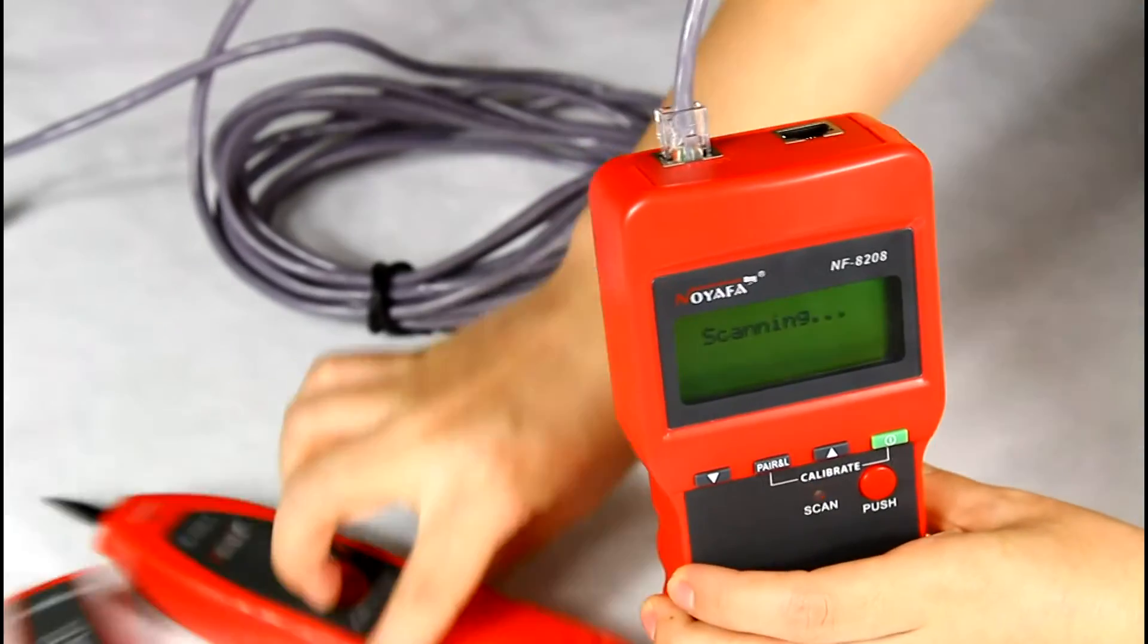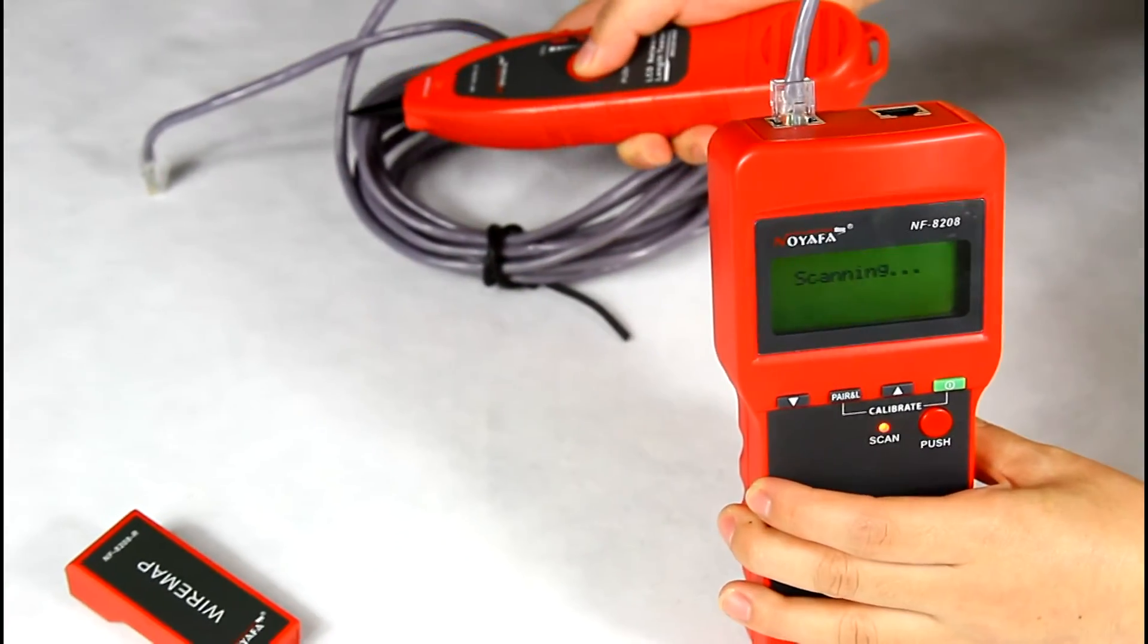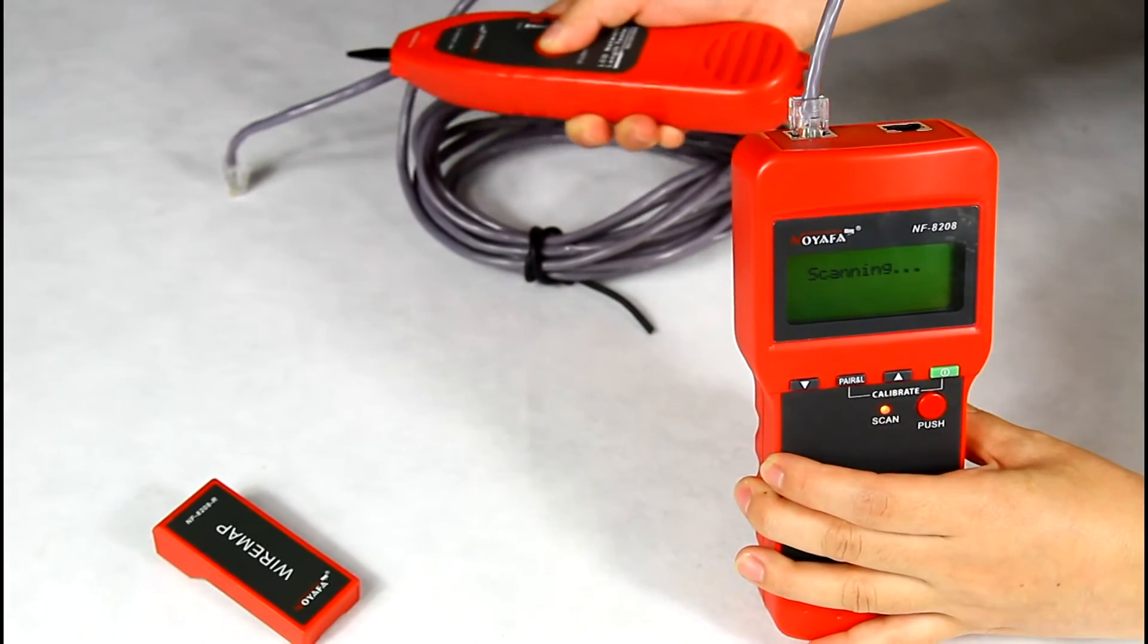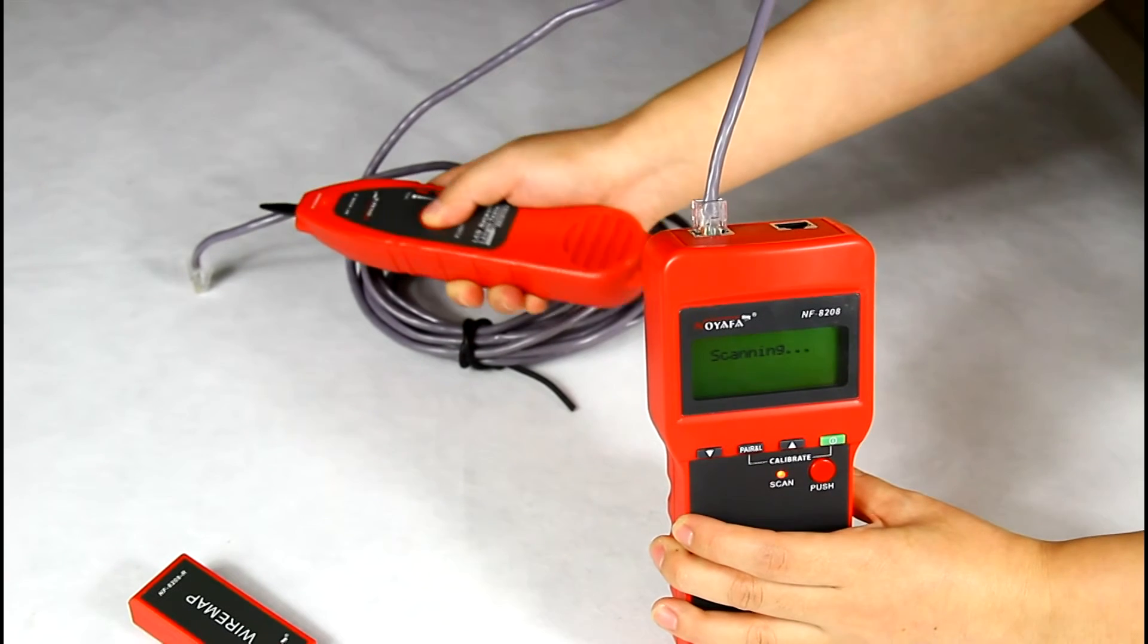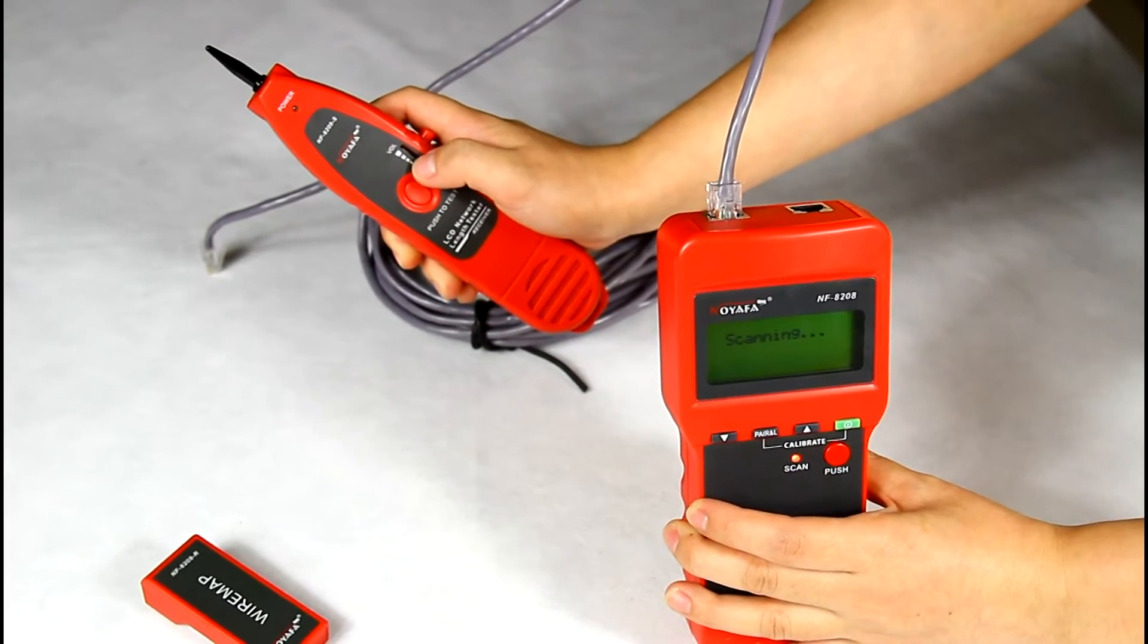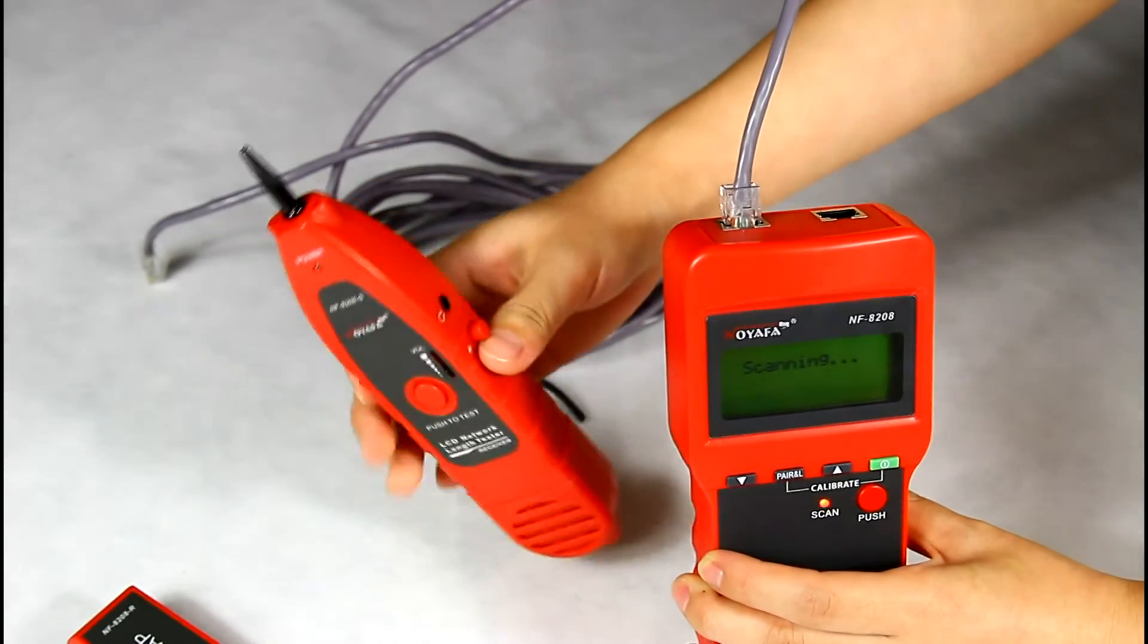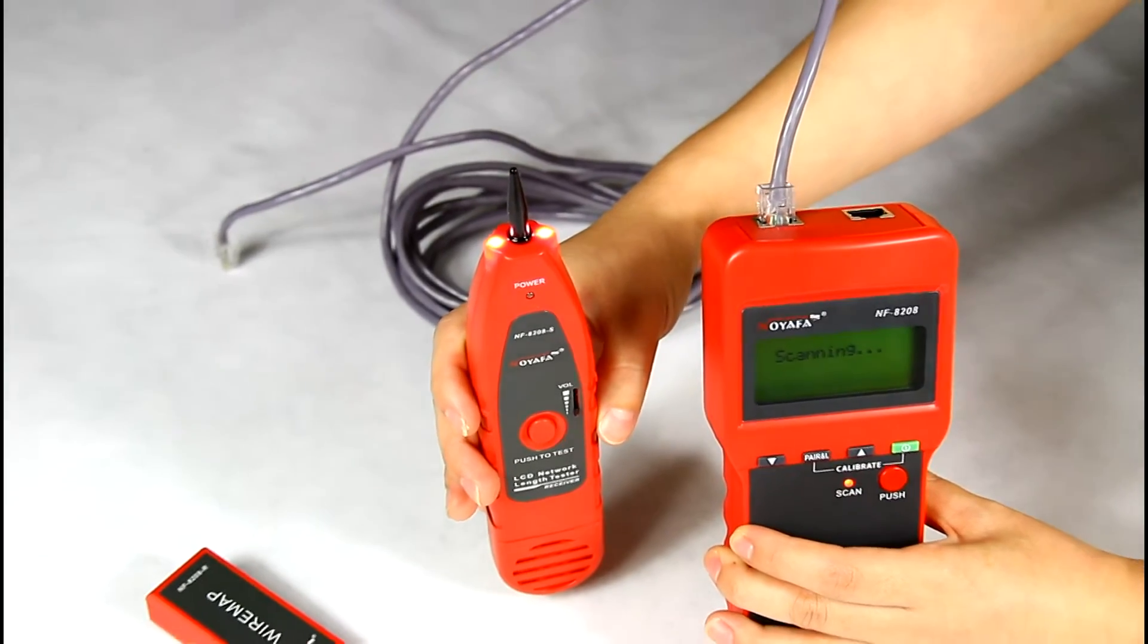Then, take the amplifier probe to get close to the cable. You will hear a loud and clear voice. You can also adjust the volume when you try to find out the cable. There is also a LED light for use in the dark corners.